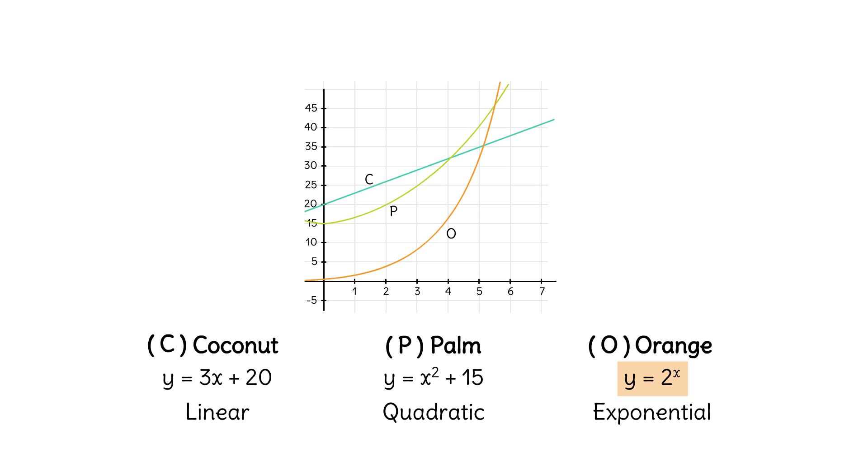Notice how quickly the turtles grow. Exponential growth functions will always eventually surpass linear and quadratic functions as X increases. Sally and Sam use their graphs of turtles over time to see that the turtles on Orange Island will eventually increase beyond those on Palm Island, and the turtles on Palm Island will eventually increase beyond those on Coconut Island. That's because exponential growth always beats quadratic growth, and quadratic growth always beats linear growth.